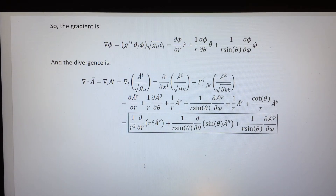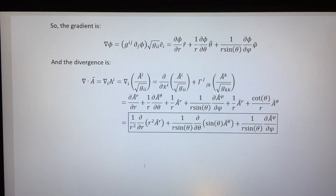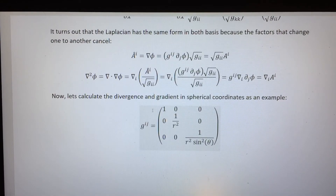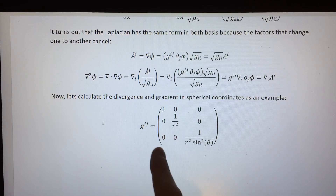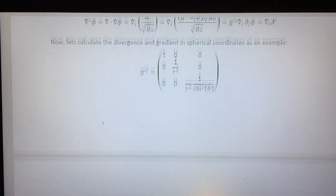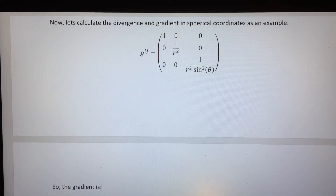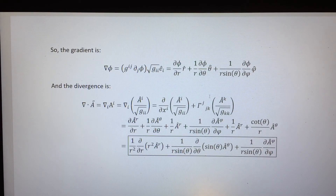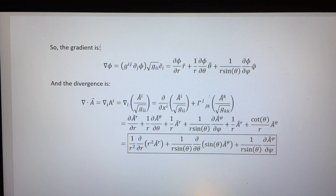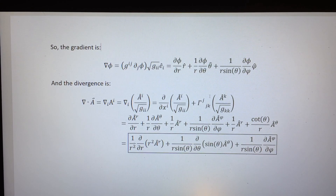So that is how you calculate the standard gradient and divergence in spherical coordinates using covariant derivatives. In fact, you can do this for any diagonal metric — most usefully for any flat metric in an orthogonal coordinate system. You just have to express the flat metric in that coordinate system, then plug and chug, and you'll get the standard values for the gradient and divergence that you can look up on Wikipedia for that coordinate system.